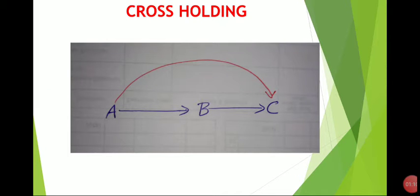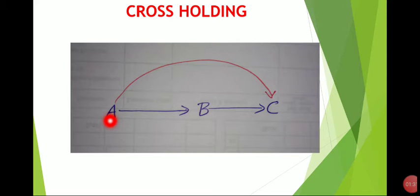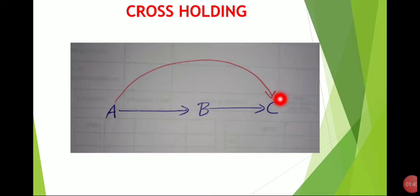What is cross-holding? For example, A is a company, B is a subsidiary of A. C is a company, B is a subsidiary of C. Since B is a subsidiary of both, automatically A is also a subsidiary. That is cross-holding — where A is subsidiary of B, B is subsidiary of C, and C is also connected back to A.